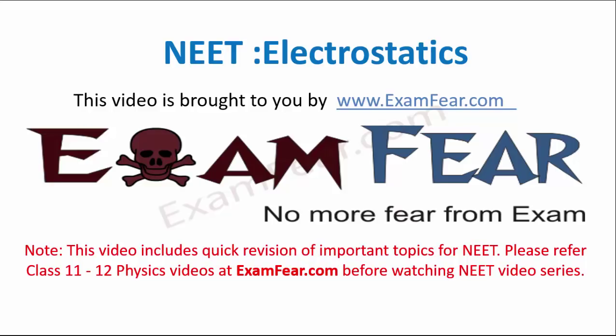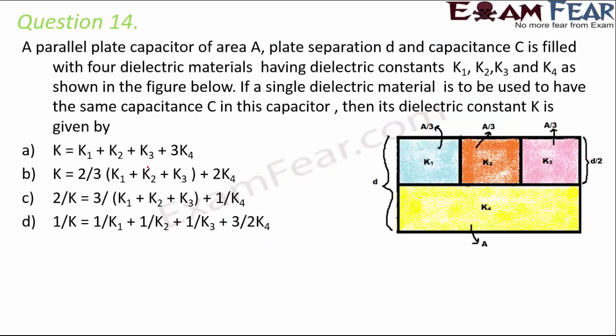Hello friends, this video on electrostatics is brought to you by examfear.com. Question number 14: a parallel plate capacitor of area A, plate separation d, and capacitance C is filled with four dielectric materials having dielectric constants k1, k2, k3, and k4 as shown in the figure. The four different colors — blue, orange, pink, and yellow — represent these four dielectric materials.